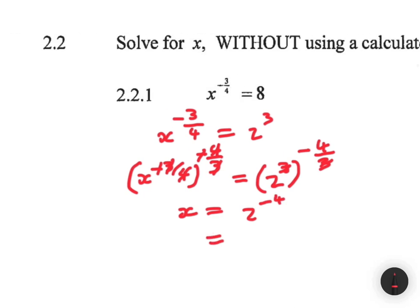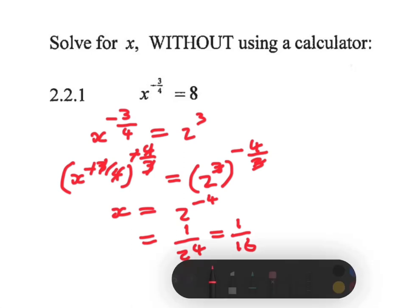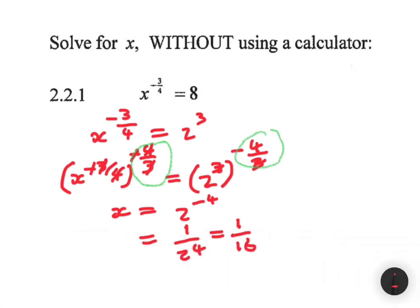So x equals 1 divided by 2 to the power 4, which is 1 divided by 16. That's it for 2.2.1 — pretty straightforward. You just have to realize you can use this technique to get rid of the power of x, and then everything becomes straightforward after that.